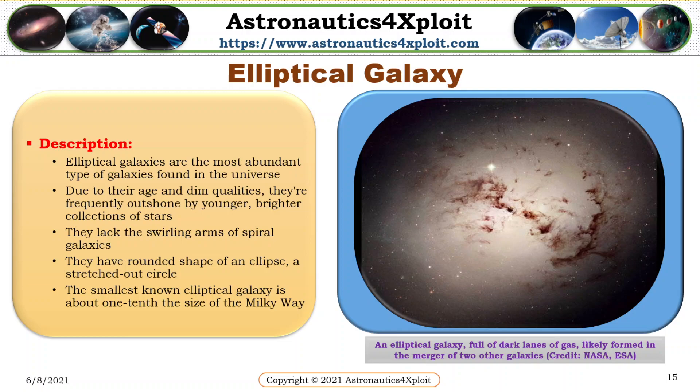Elliptical galaxies are the most abundant type of galaxies found in the universe. As a result of their age and dim qualities, they are frequently overshadowed by younger, brighter collections of stars. They lack the swirling arms of spiral galaxies. They have the rounded shape of an ellipse, a stretched-out circle. The smallest known elliptical galaxy is about one-tenth the size of the Milky Way. This picture shows an elliptical galaxy, which is full of dark lengths of gas, likely formed as a result of the merger of two other galaxies.